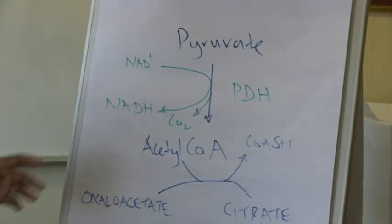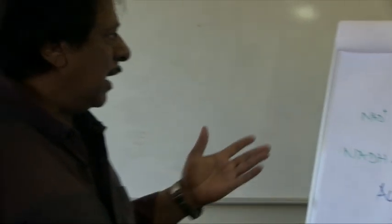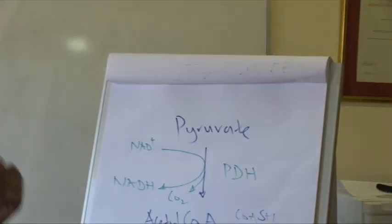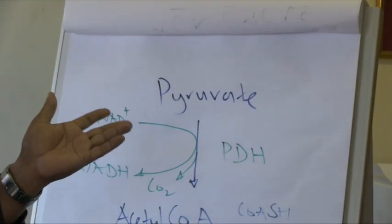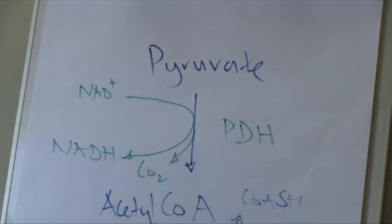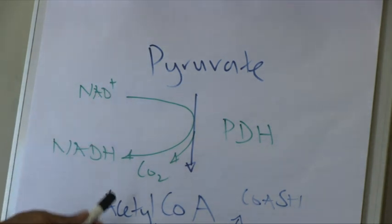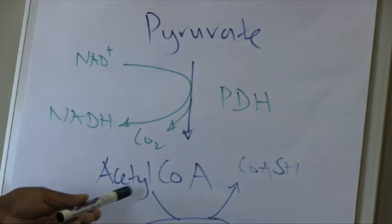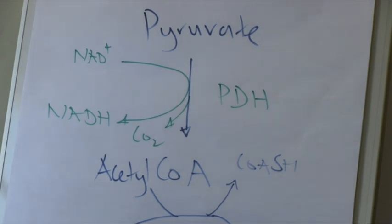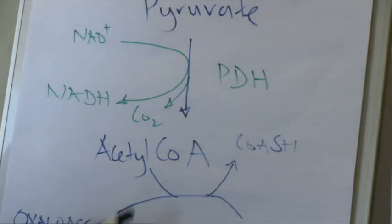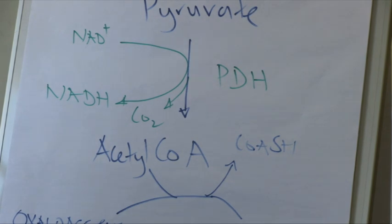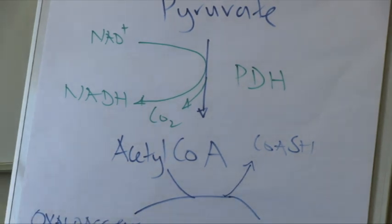You'll recall that in part two of the series I dealt with glycolysis, and we ended up with the three-carbon molecule pyruvate — those carbons were originally part of the glucose molecule. Under aerobic conditions the pyruvate will enter the mitochondrion, where it is converted to acetyl coenzyme A. The acetyl group contains two carbons, which implies that in the conversion of pyruvate to acetyl-CoA we lose one carbon in the form of carbon dioxide — we call this a decarboxylation reaction.